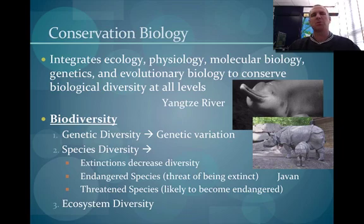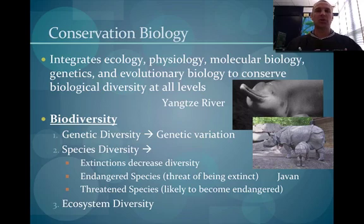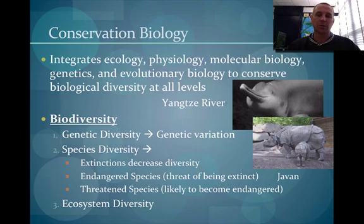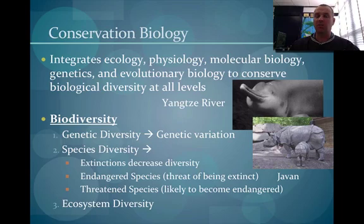In terms of species, sometimes you hear about endangered species — these are the ones that are in threat of becoming extinct. Ones that have become extinct, their diversity and genetics that they add to the population are totally gone forever. And then you have threatened species, which are eventually going to become endangered and could eventually go extinct. I have a picture of two animals with less than a hundred left in the world: the Yangtze river dolphin and the Javan rhinoceros are two examples in very, very low numbers.